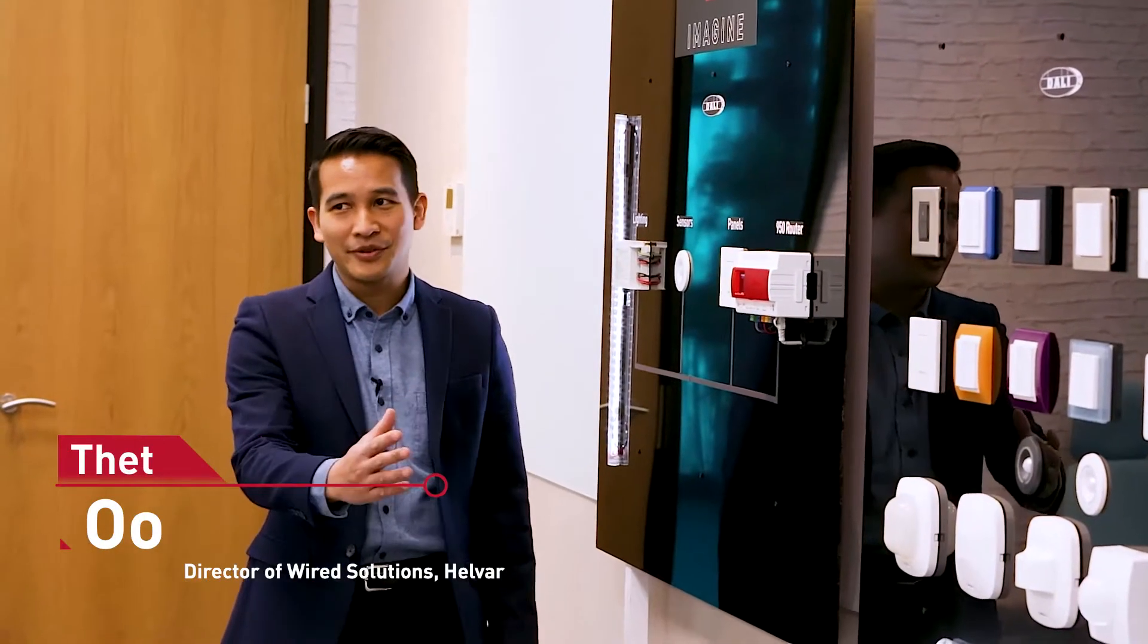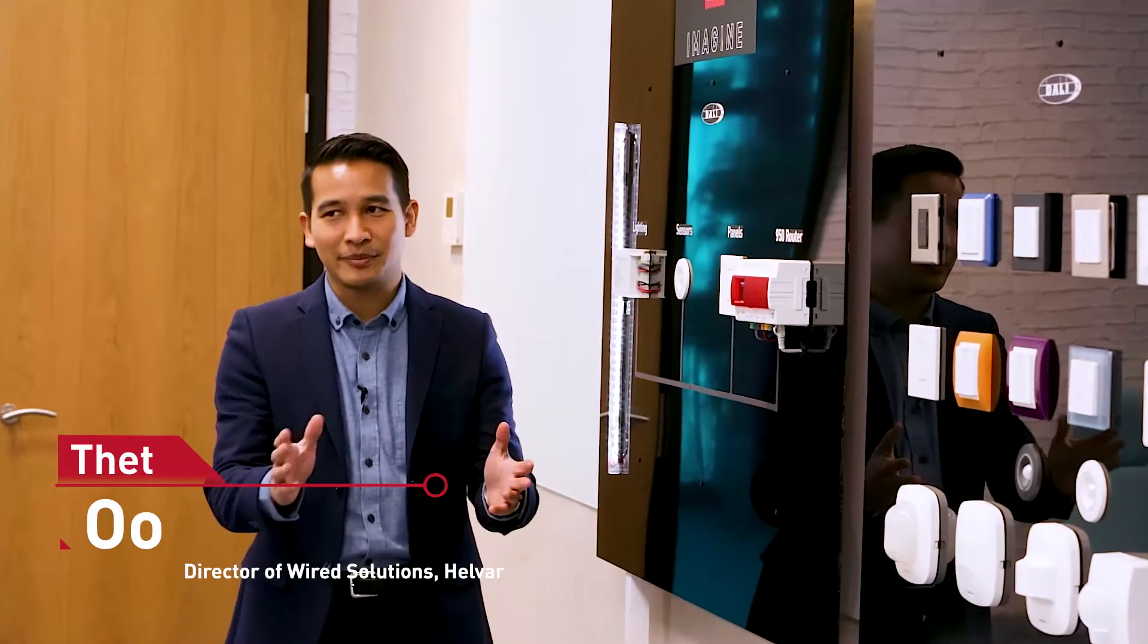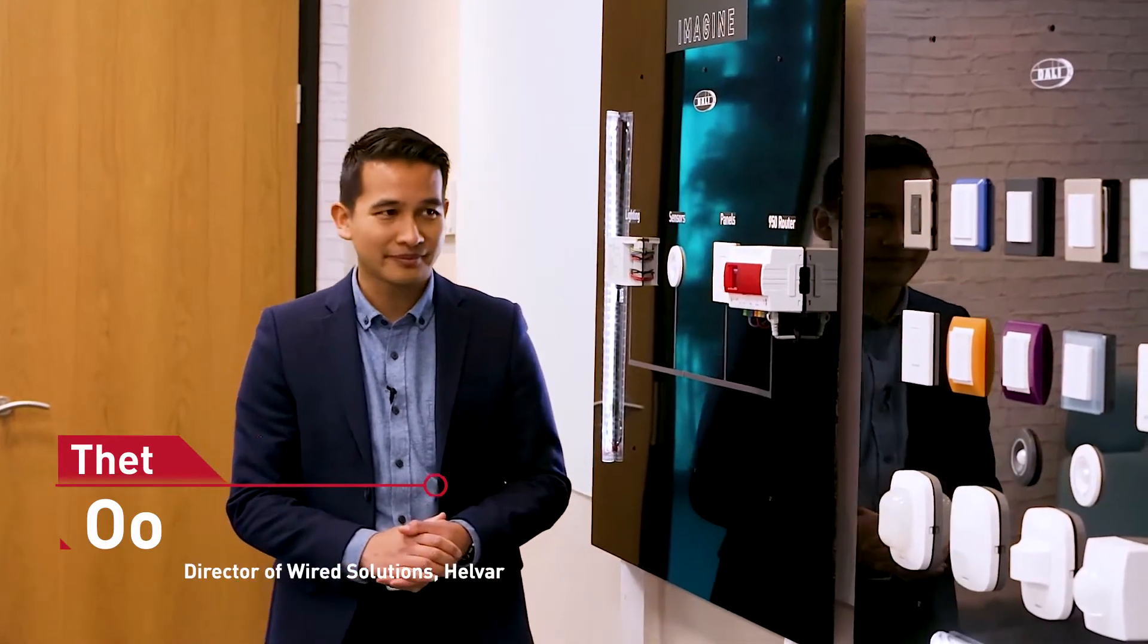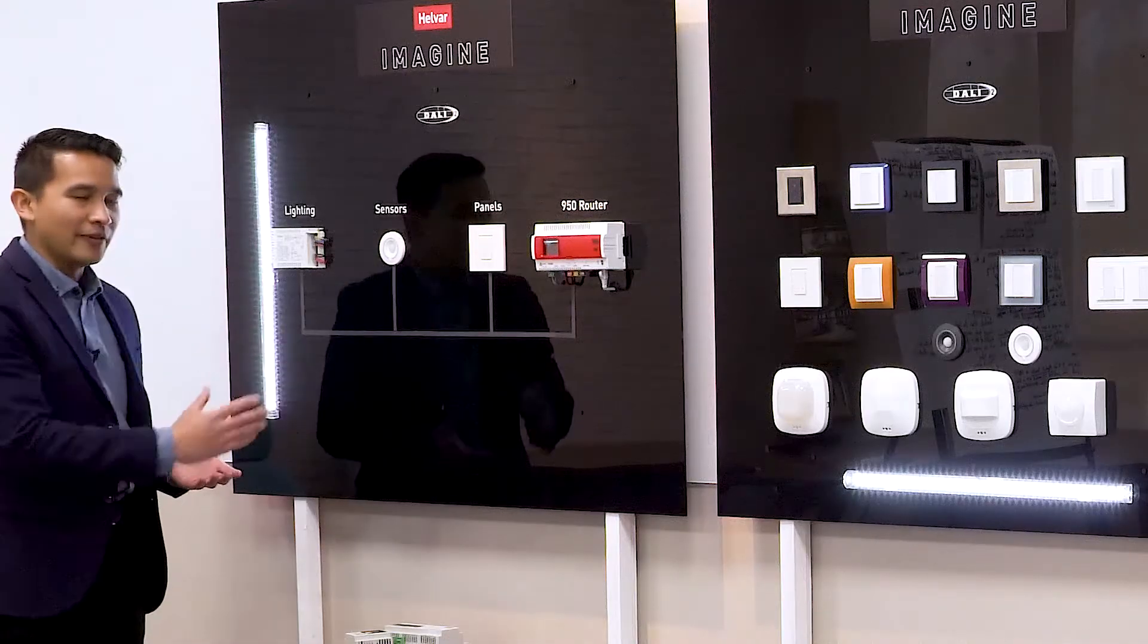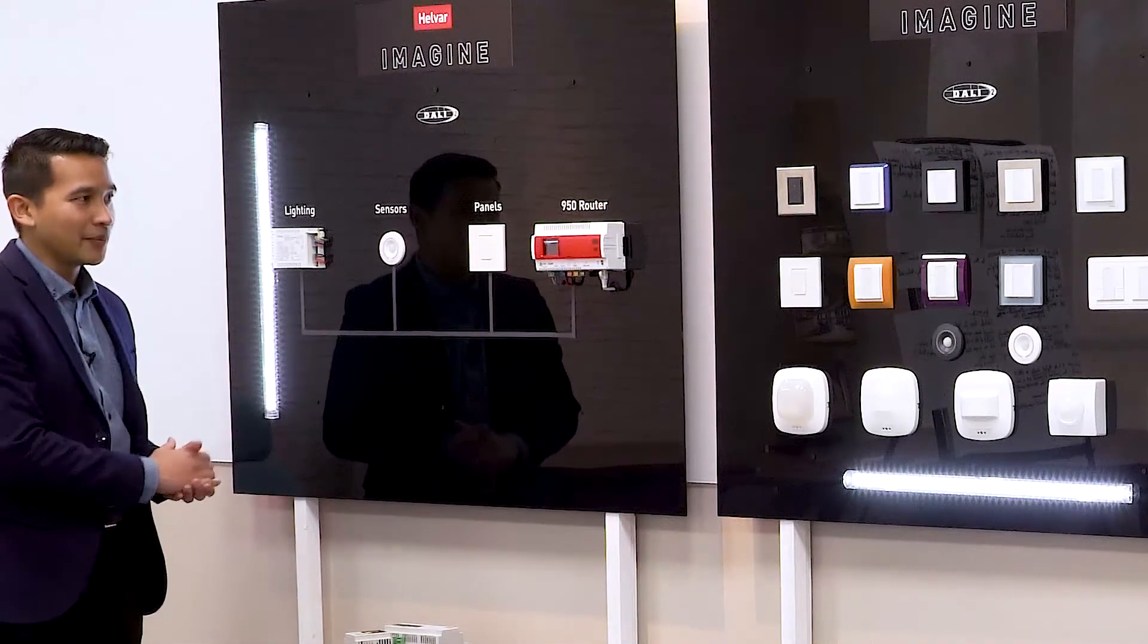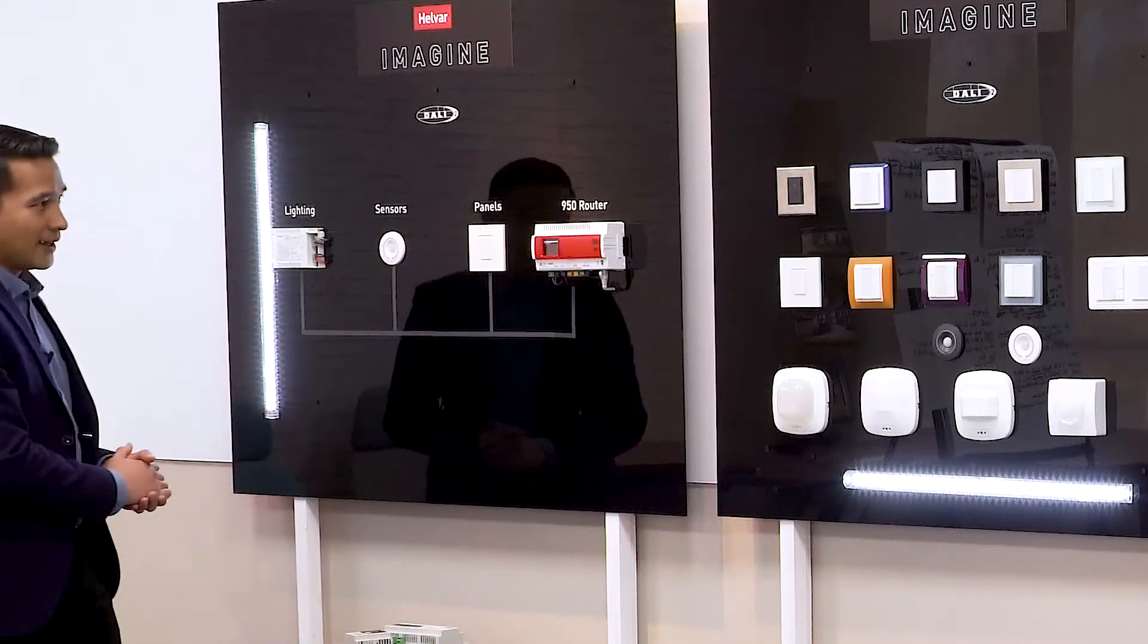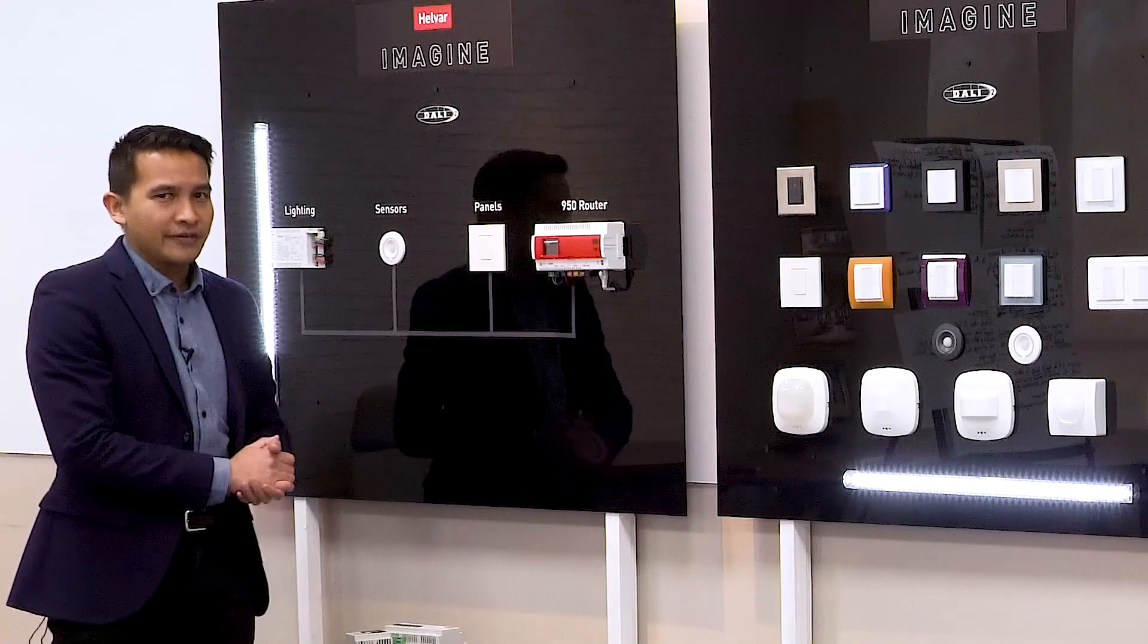Today I'm going to show you three boards, and this is going to help tell the story of Imagine. The first board is an example of a DALI 2 setup with the 950 router. So let's talk about the 950 router first.